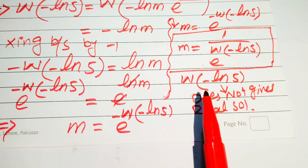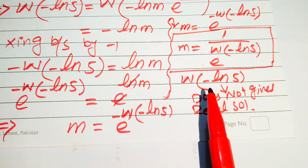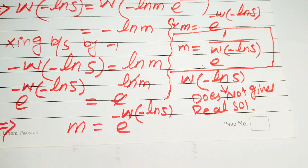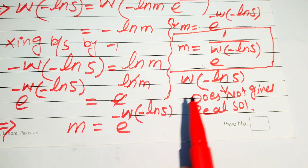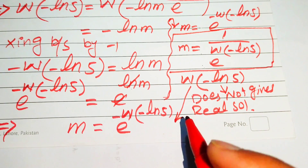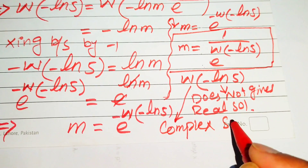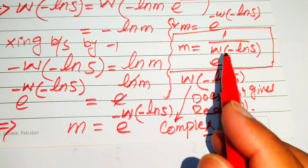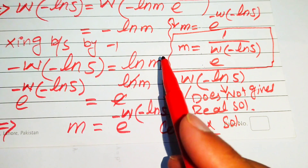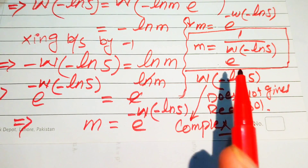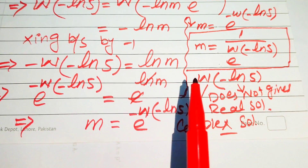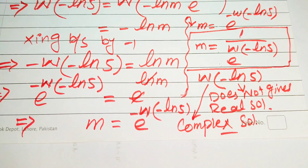To find the exact solution of this Lambert W function, we need to use software such as Wolfram Alpha to get the exact numerical value. This function gives us a complex solution, meaning the whole value of m is complex, not real. This is the final answer of this question. Thank you so much for watching this video — please subscribe to my channel for more exciting videos.